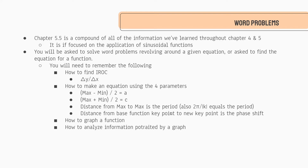Lastly, we can find the horizontal displacement, and that is actually really simple. All you need to understand is what the function is actually talking about. Using the months example: if we have a peak at seven months — our highest temperature occurs in July — but regularly a sinusoidal sine function will have a peak one quarter through its period, which is a quarter of 12, so at three months. Our peak is not at three months, it's at seven months, so we moved the function four months to the right: three plus four equals seven.